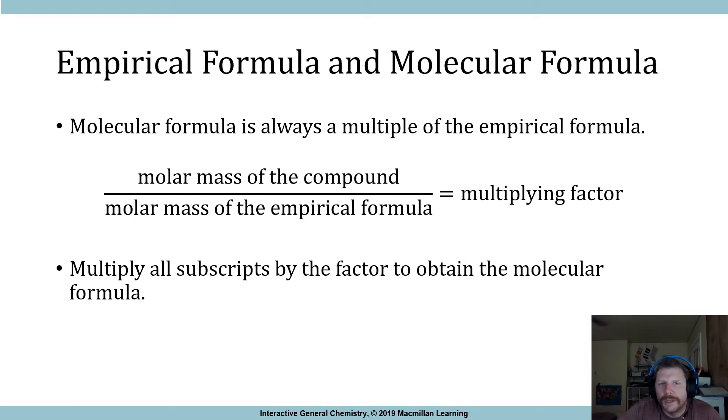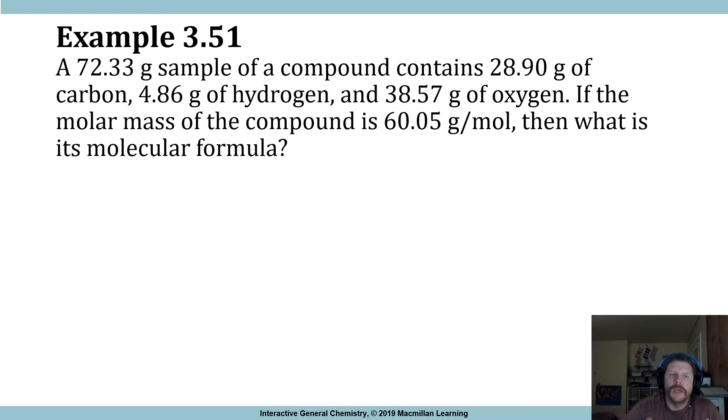So the molecular formula is always a multiple of the empirical formula. And so what you can do is you can figure out a multiplying factor to draw those connections. So you can take the molar mass of a compound, divide it by the molar mass of the empirical formula, and come up with your multiplying factor. Once you have that multiplying factor, you multiply all subscripts by the factor to obtain the molecular formula.